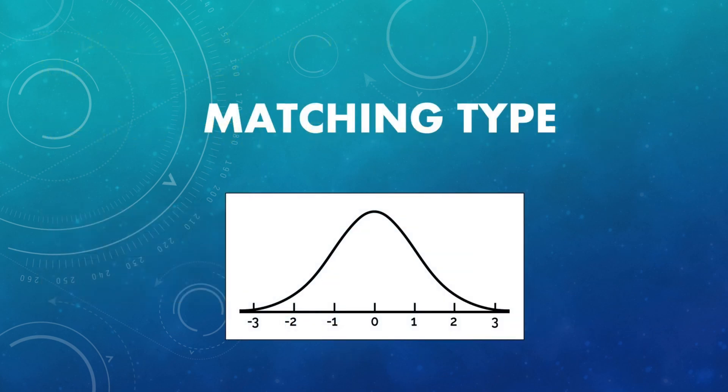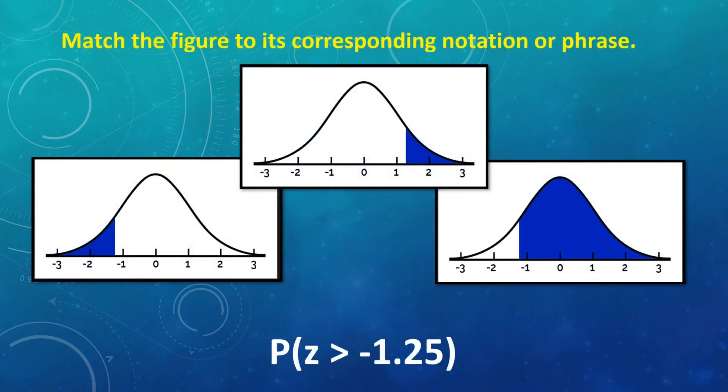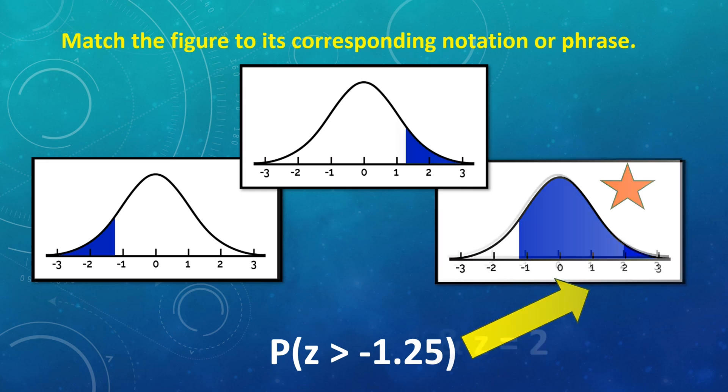Next is the matching type. You're going to match the given probability notation or the process to the following graph. So, number one is the probability of z greater than negative 1.25. Choose your answer. So, if you have the answer, this one is the correct one.